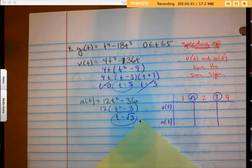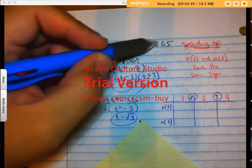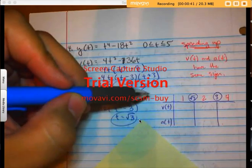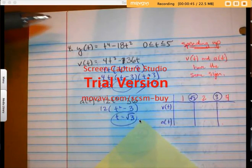Why did I cross these out? Well, they're not in my interval. So I made a little chart here, my velocity and acceleration chart, and I've got...